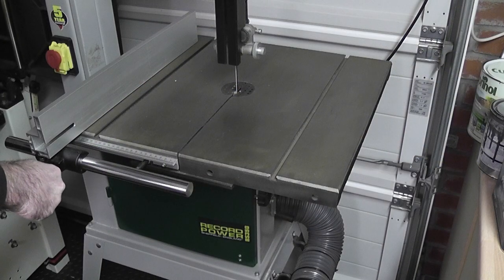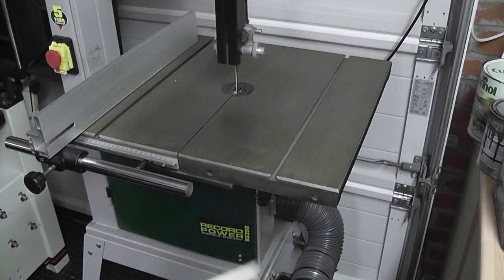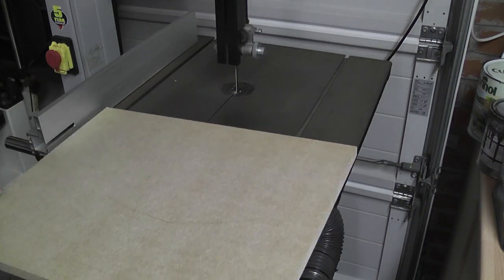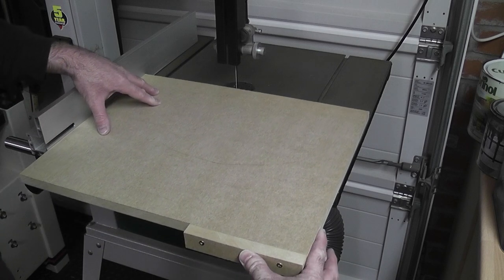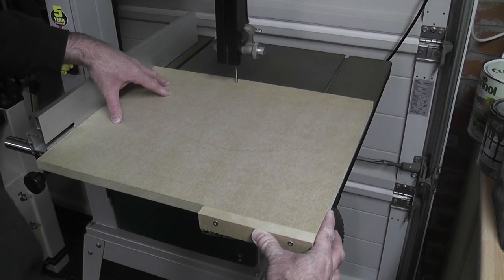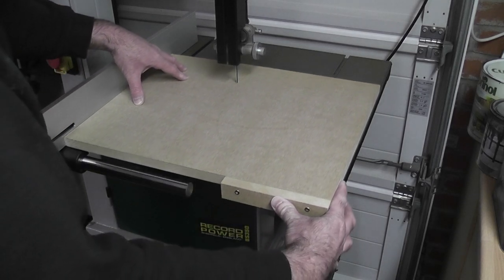The fence is secured and the MDF placed onto the table. With the bandsaw on, I just cut into the MDF until the stop prevents the piece from sliding any further, then the bandsaw's turned off.